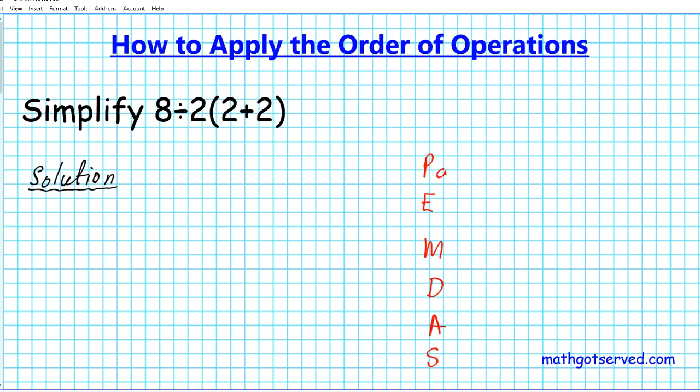P basically means parentheses. You do parentheses first and then E is for exponents. M is for multiply. D is for divide. A is for add and S is for subtract.